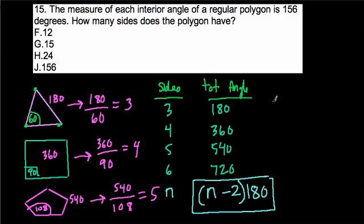And what does this mean? Well, if I take n minus 2 times 180, what does that equal? Well, that equals the total angle in measure in a shape. So, I'll call that T.